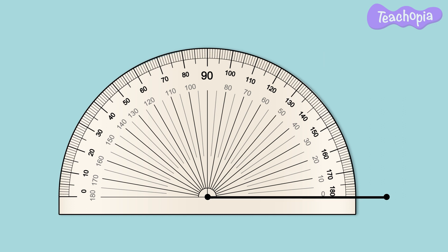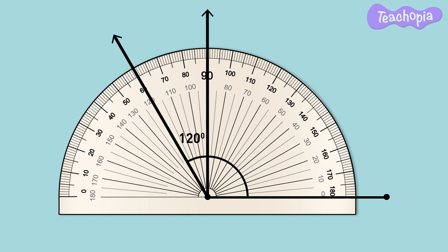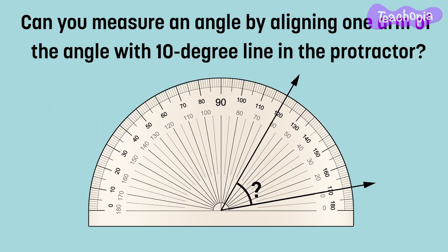Using a protractor we can start measuring any angle not only from 0 degrees but from any other angle marking as our reference. Can you measure an angle by aligning one arm of the angle with a 10 degree line in the protractor? Try this out.